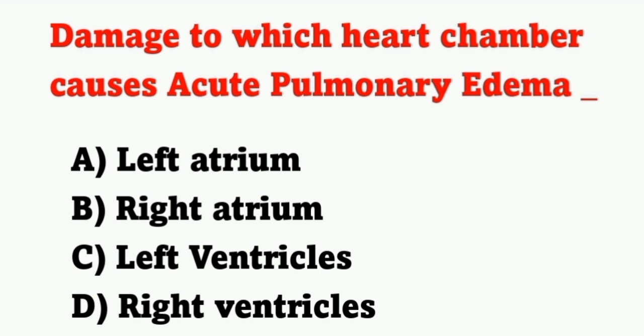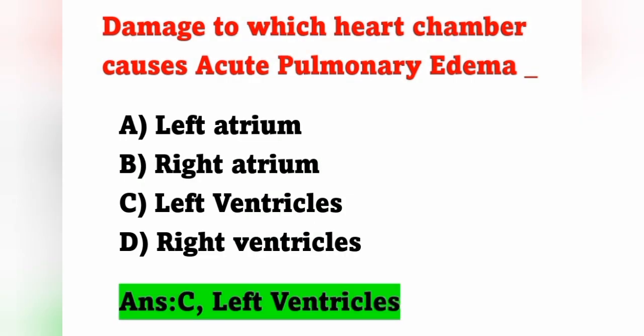First question: damage to which heart chamber causes acute pulmonary edema? Options: A) Left atrium, B) Right atrium, C) Left ventricle, D) Right ventricle. Acute pulmonary edema is a life-threatening condition occurring from severe heart failure. The left ventricle fails to eject a sufficient amount of blood, so pressure in the lungs increases due to accumulation of blood. Option C, left ventricle, is the correct answer.